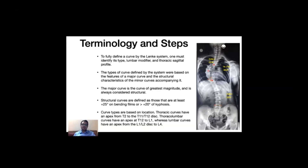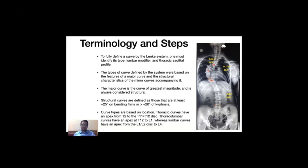On the sagittal plane, for a proximal thoracic curve, we calculate the Cobb angle between T2 and T5 vertebrae, and if it is more than 20 degrees it is considered structural. For a main thoracic or thoracolumbar lumbar curve, we calculate the Cobb angle between T10 to L2 vertebrae, and if it is more than 20 degrees it is considered structural.